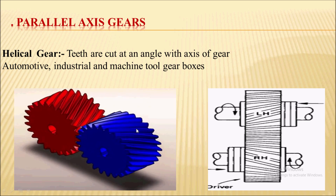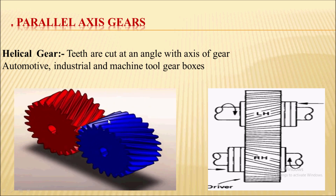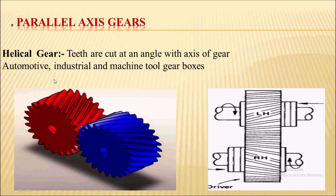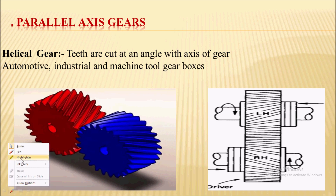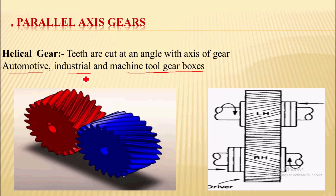Helical gears are compact in size but also difficult to manufacture because of their compact construction. The engagement of teeth in a helical gear is gradual, making them smooth and silent in operation compared to spur gear. The efficiency is also good compared to spur gear. Helical gears are used in automotive, industrial, and machine tool gearboxes.